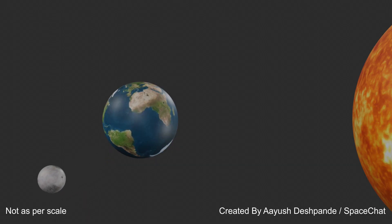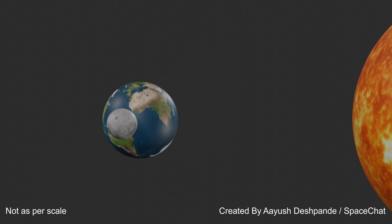Let's see why eclipses don't occur every month. The moon's orbit is actually tilted at 5.14 degrees, and that is why sometimes the moon is above the earth and sometimes below the earth. That is the reason the three are not always in a line, and all three of the celestial bodies have to be in a single line for an eclipse to occur.